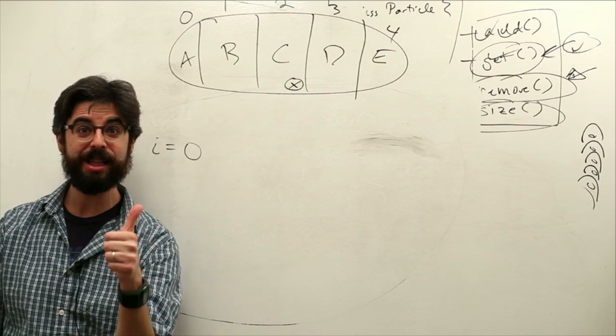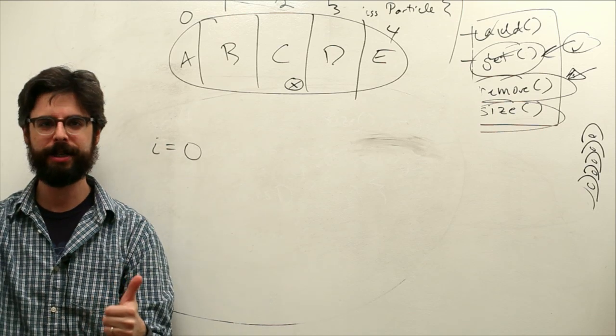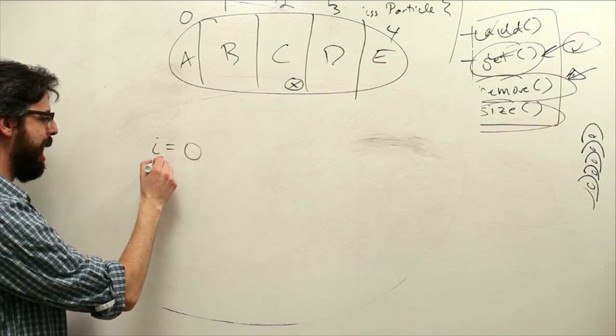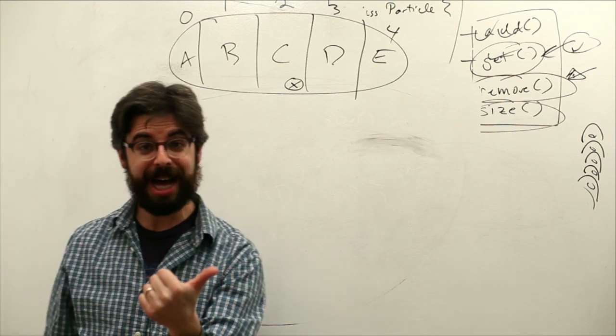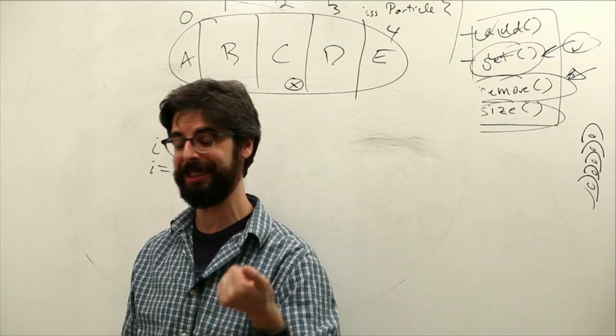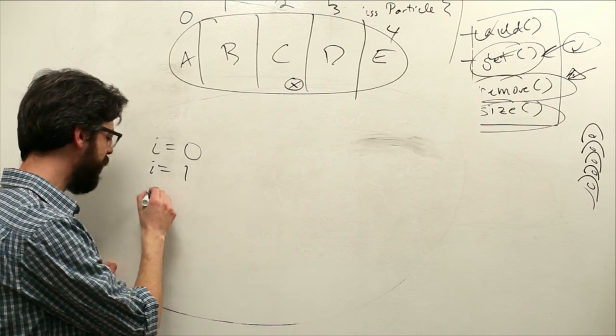0 is A. Is A alive? Yup. Update display. We're done. I is now equal to 1. Is 1 alive B? Yes it is. Update display. I is now equal to 2. Is 2 alive? No, it's dead.